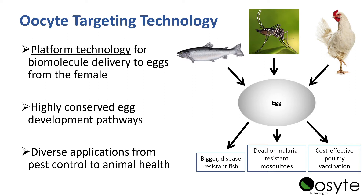Our IP is a platform technology to deliver biomolecules to eggs from the circulatory system of adult females. This exploits highly conserved egg development pathways that pretty much every egg-bearing animal has, all the way from insects up to platypuses, with very diverse applications ranging from pest control to animal health.